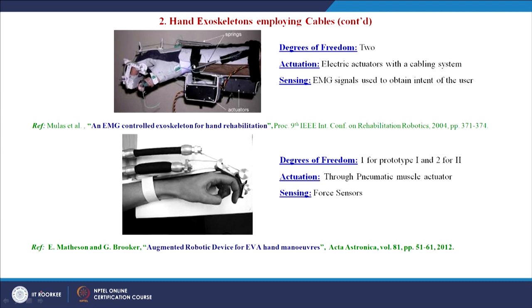The exoskeleton developed by Mullis et al. in 2004 has 2 degrees of freedom: one for flexion-extension and the other for MCP and PIP joints. It provides opening and closing — one system for the thumb and another for the collective four fingers. Actuation is done by electric DC motors with a cabling system, and sensing uses EMG signals to obtain the subject's intention.